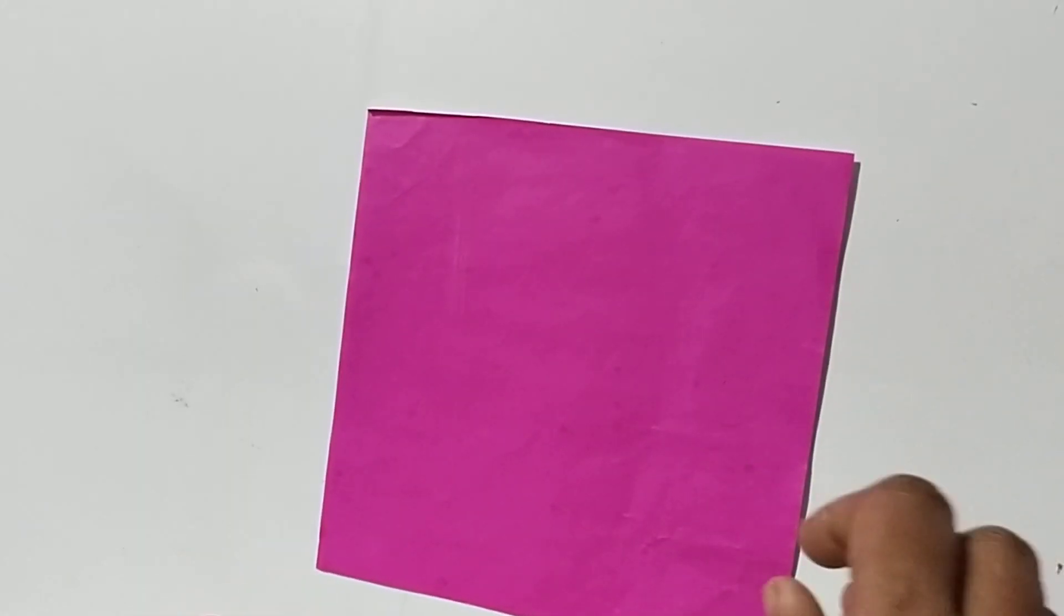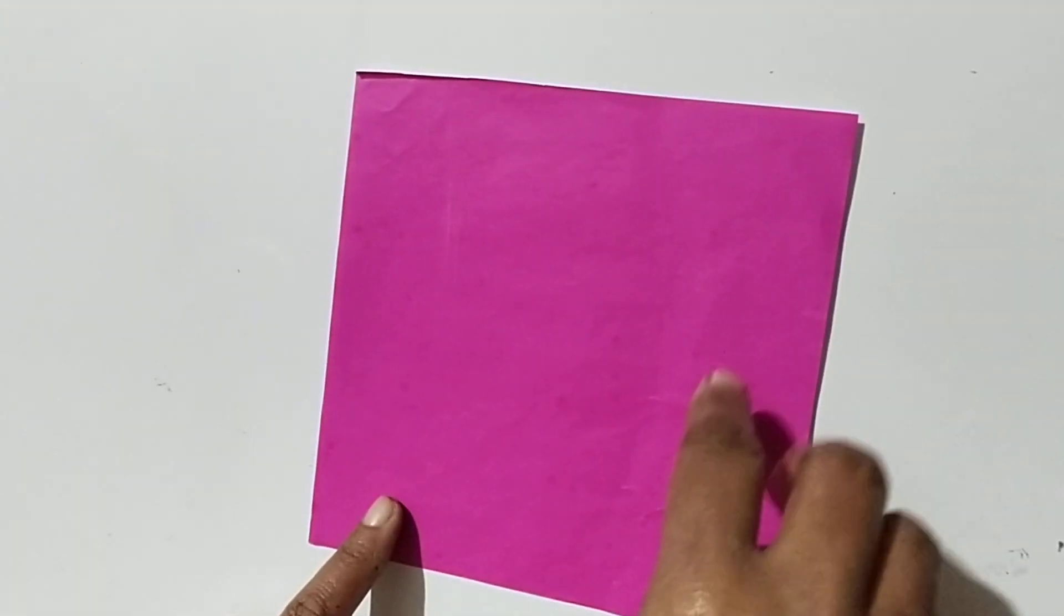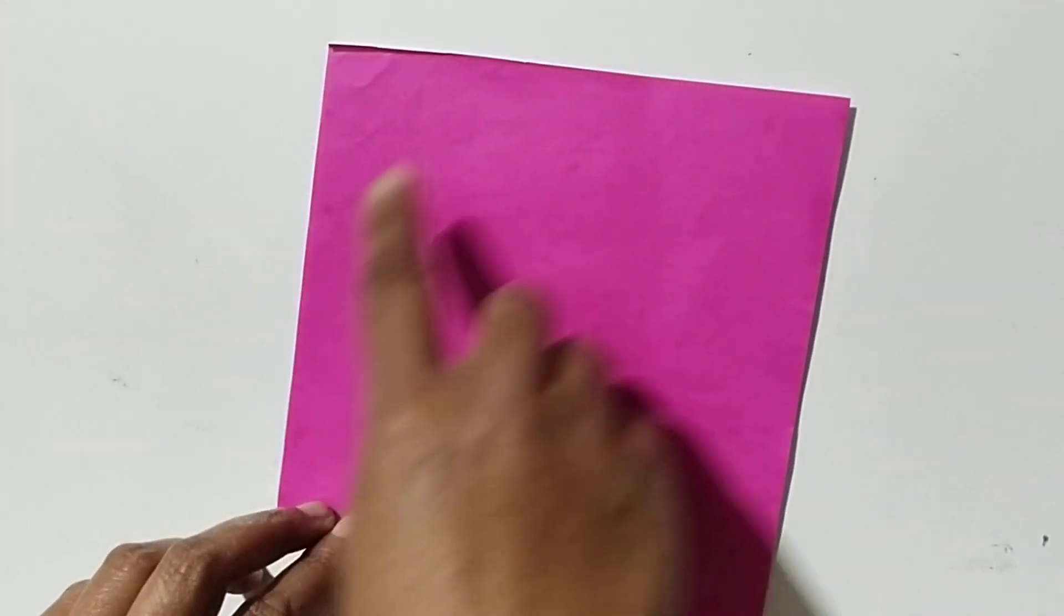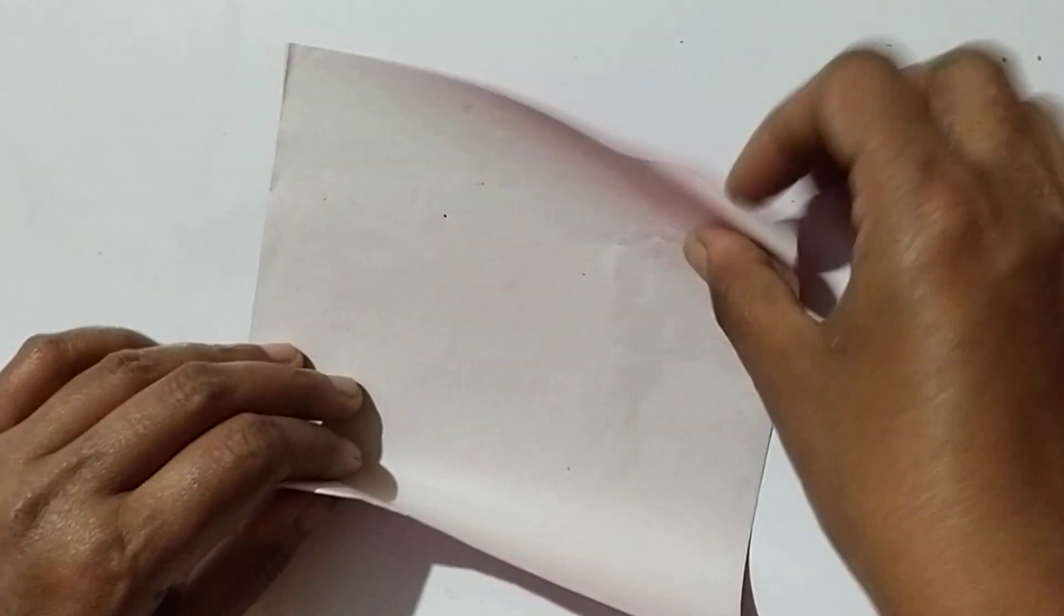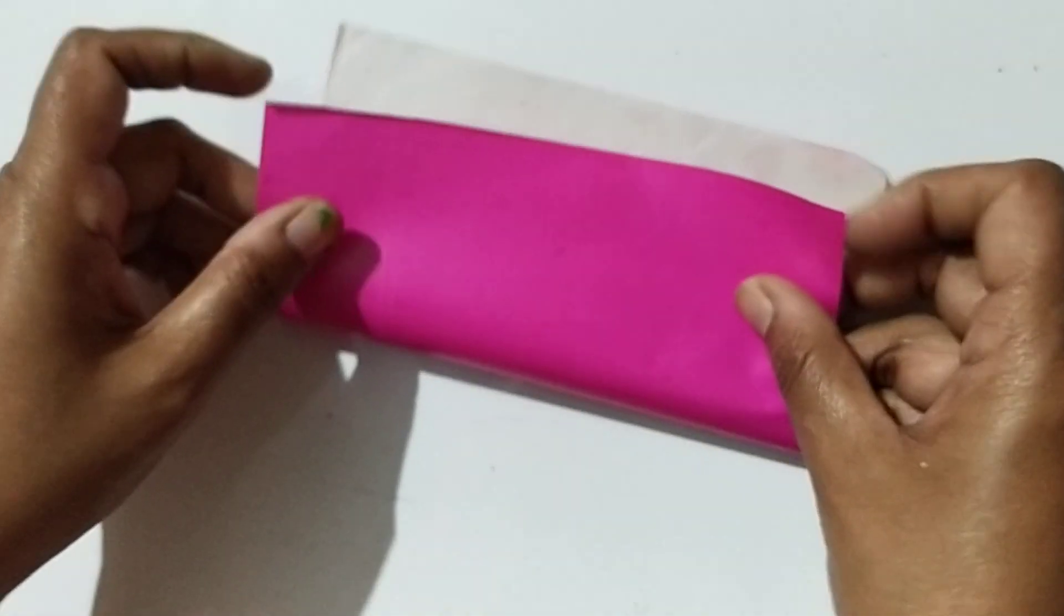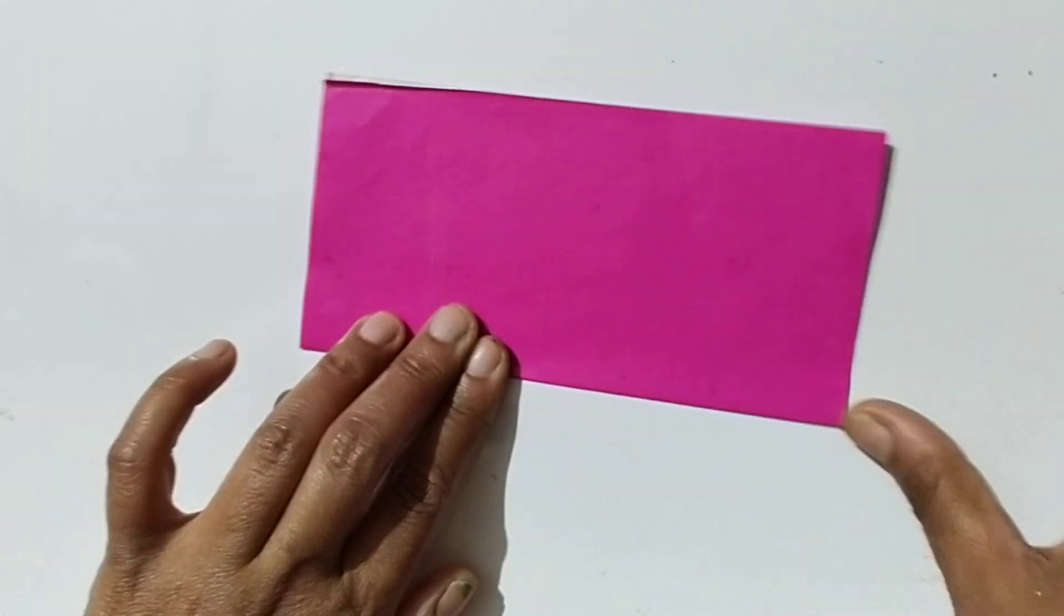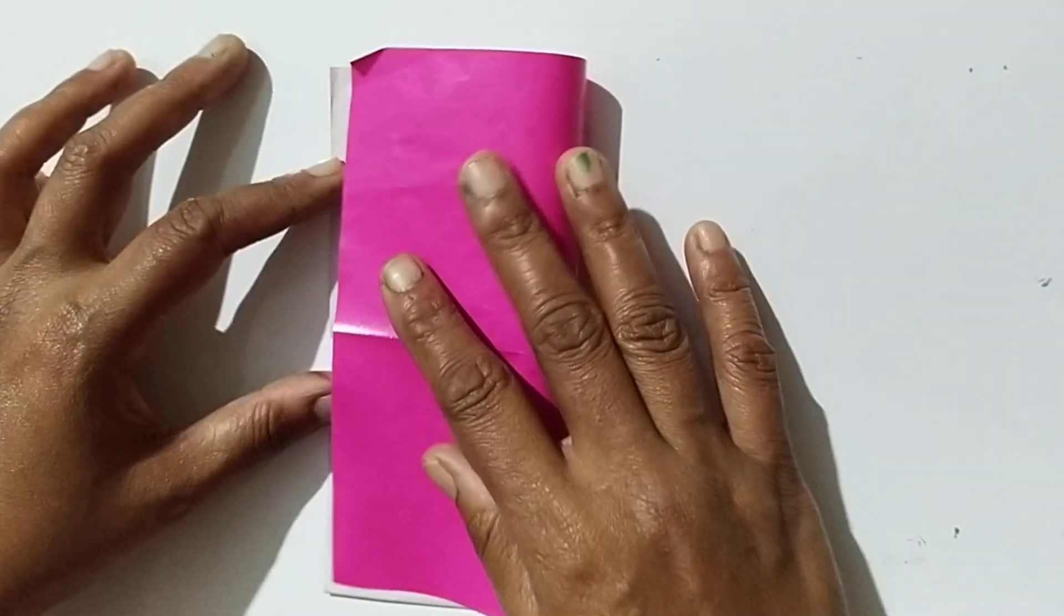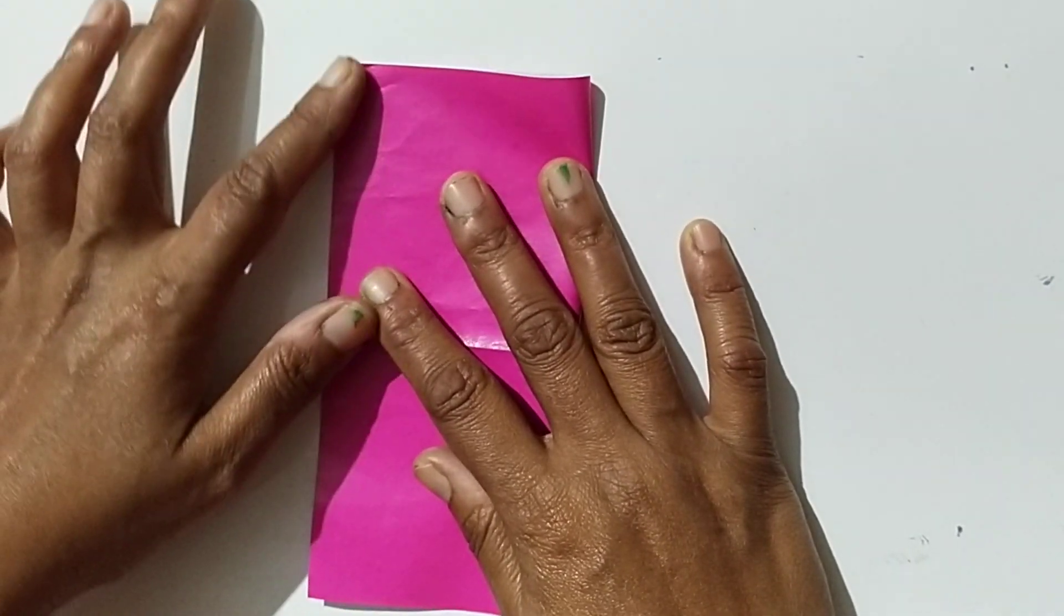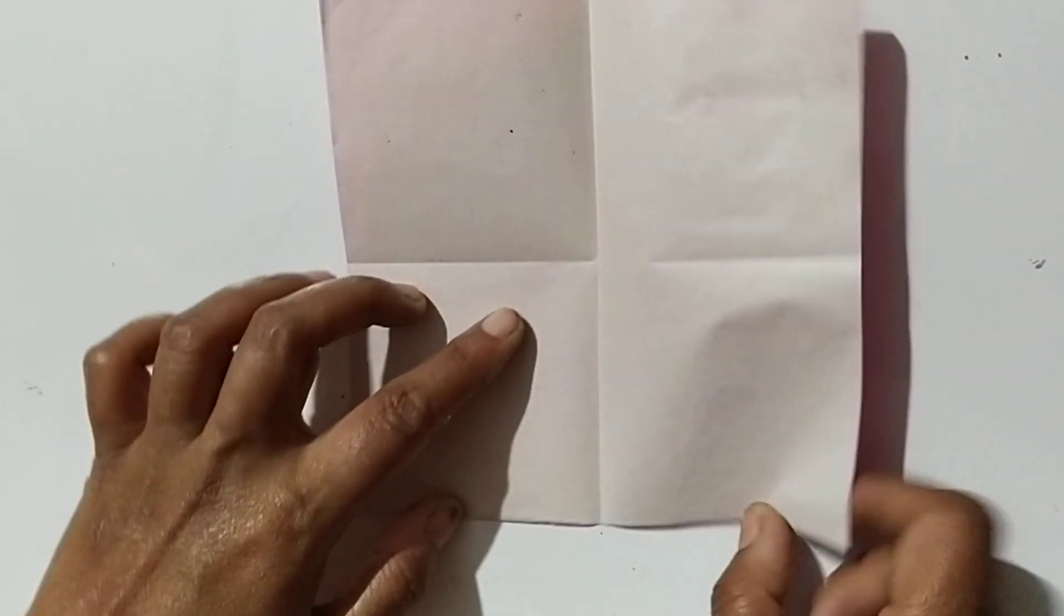Hello students, good afternoon. Today we are going to make a fish by paper. For this, first take a square sheet of paper, then fold in half like a rectangle shape, then unfold it. Again fold in half on another side and unfold.